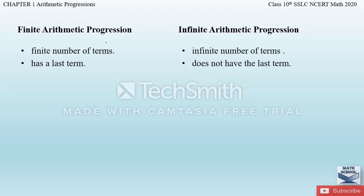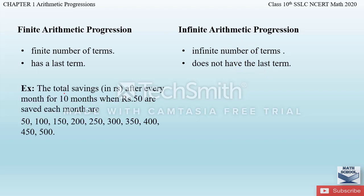There are two kinds of Arithmetic Progressions: finite and infinite. A finite AP has a finite number of terms and the last term is mentioned. An infinite AP has infinitely many terms and does not have a last term.